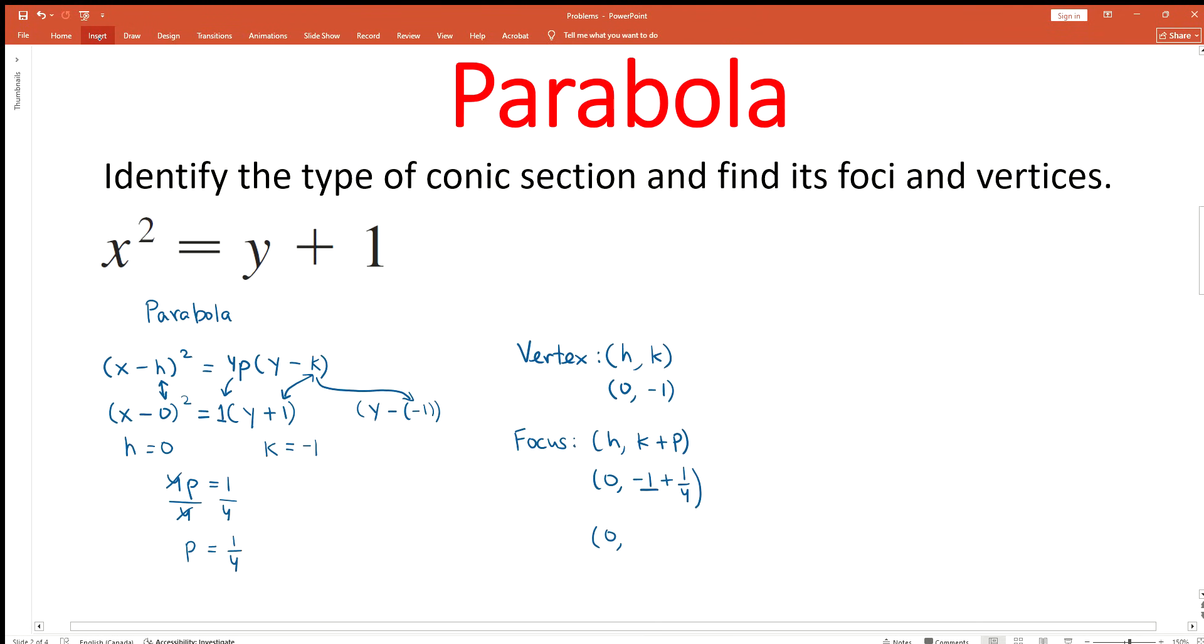The denominator of -1 is 1. The common denominator is 4. So it becomes -4/4 + 1/4, which is equal to -3/4. So the focus point is (0, -3/4).